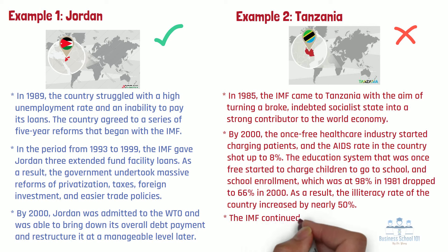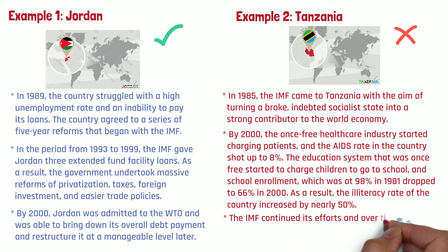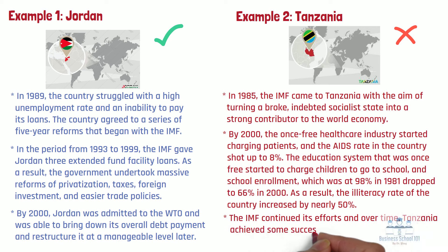Notwithstanding, the IMF continued its efforts to provide Tanzania with various types of assistance, and over time the nation achieved some success in different areas. The annual inflation rate went from a high of 37.9% in 1994 to 4.1% in 2004. Simultaneously, real gross domestic product, or GDP, grew from 1.6% in 1994 to 7.4% in 2004.